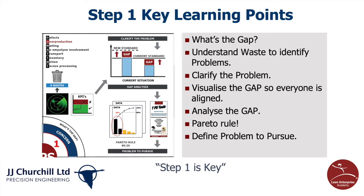Step one is key as it clarifies the problem you are trying to solve. In simple numeric terms, we need to quantify the problem or the gap. Using key performance indicators is a good way to do this. We then need to analyze the gap, breaking it down using data and Pareto diagrams — the 80/20 rule from the seven problem-solving tools.